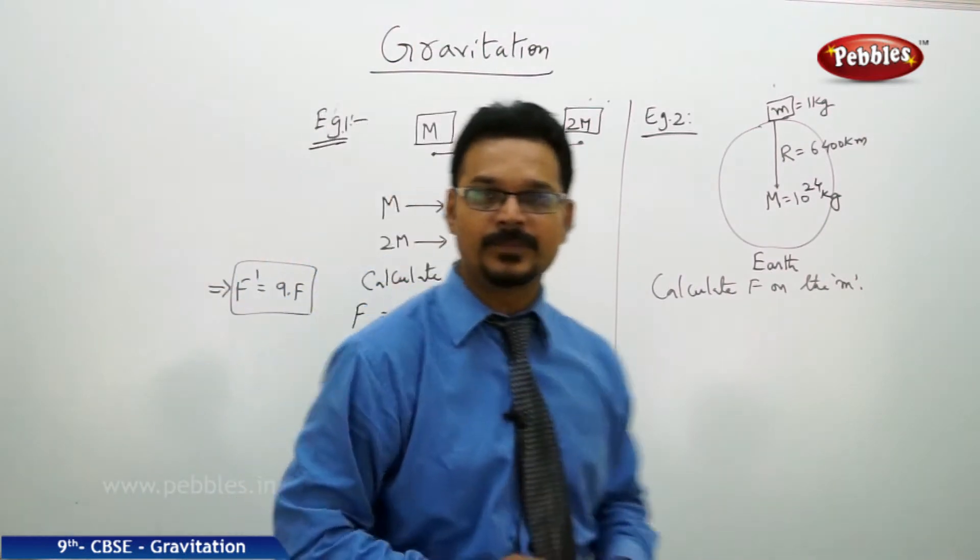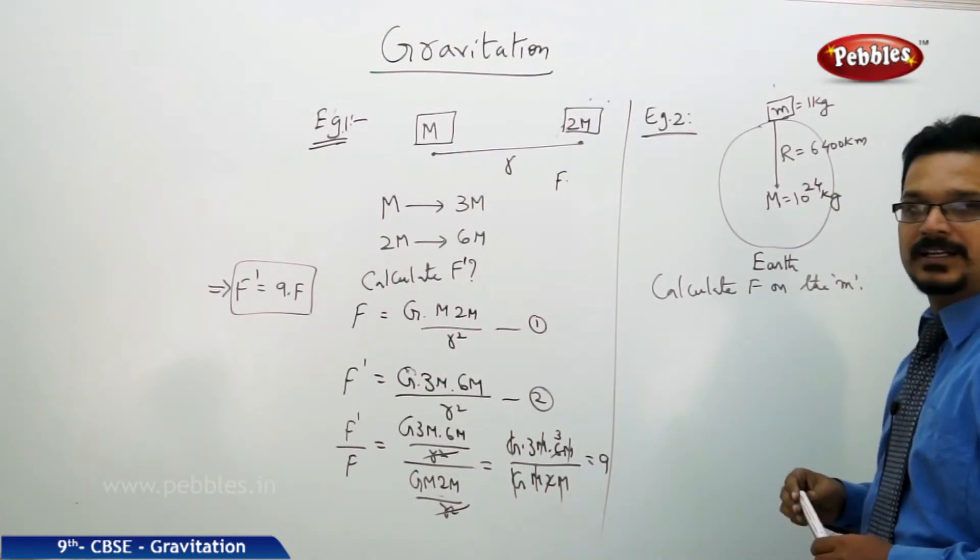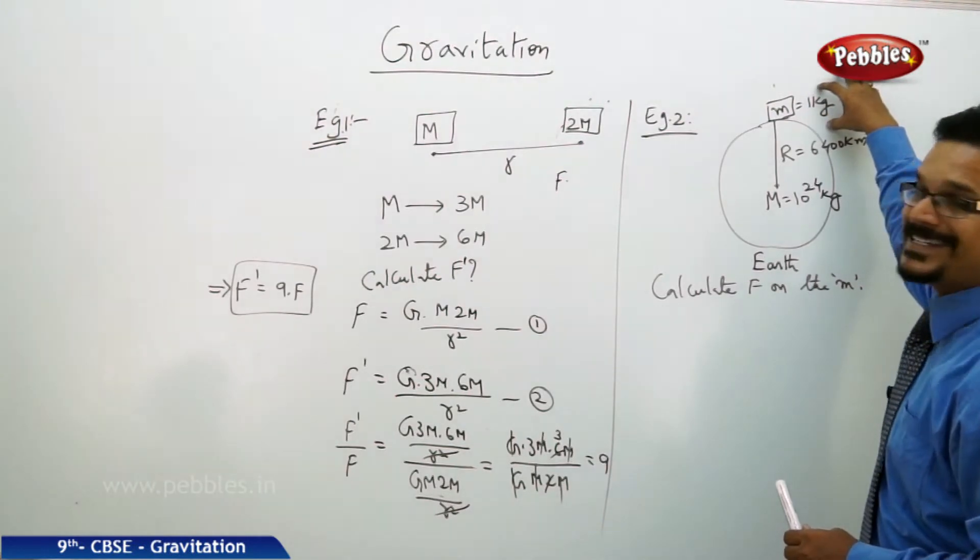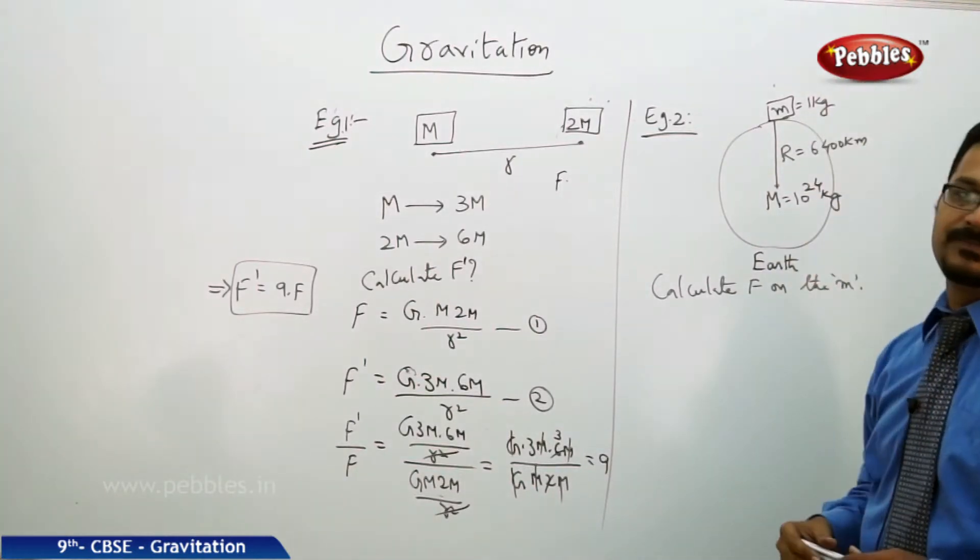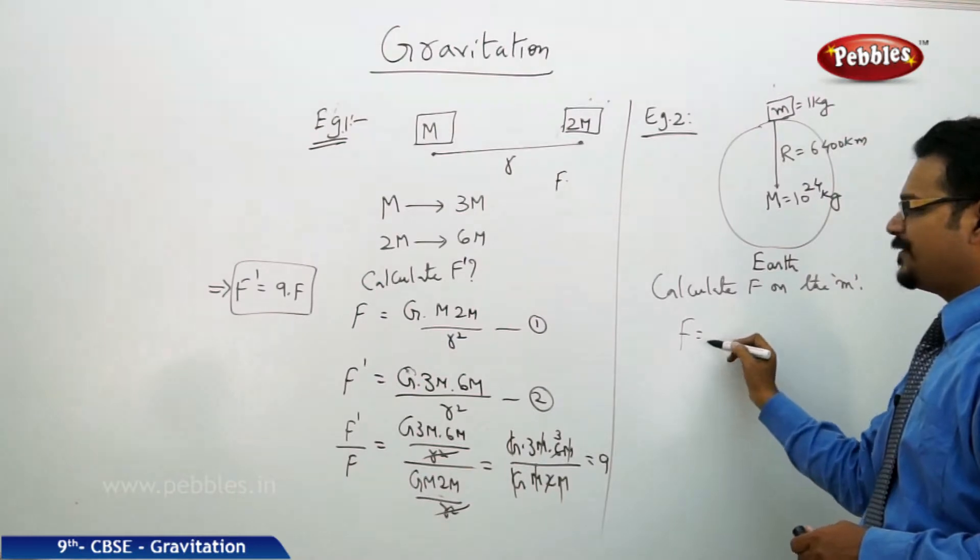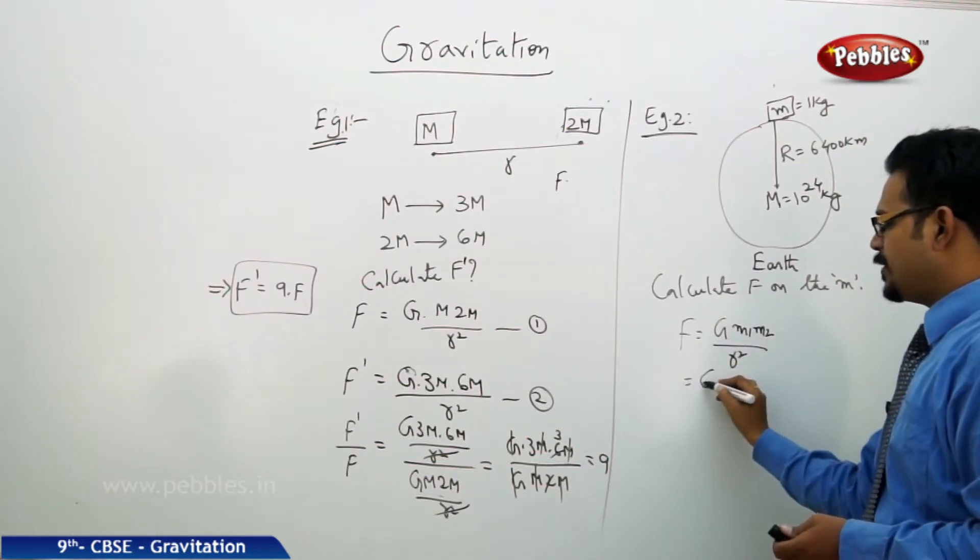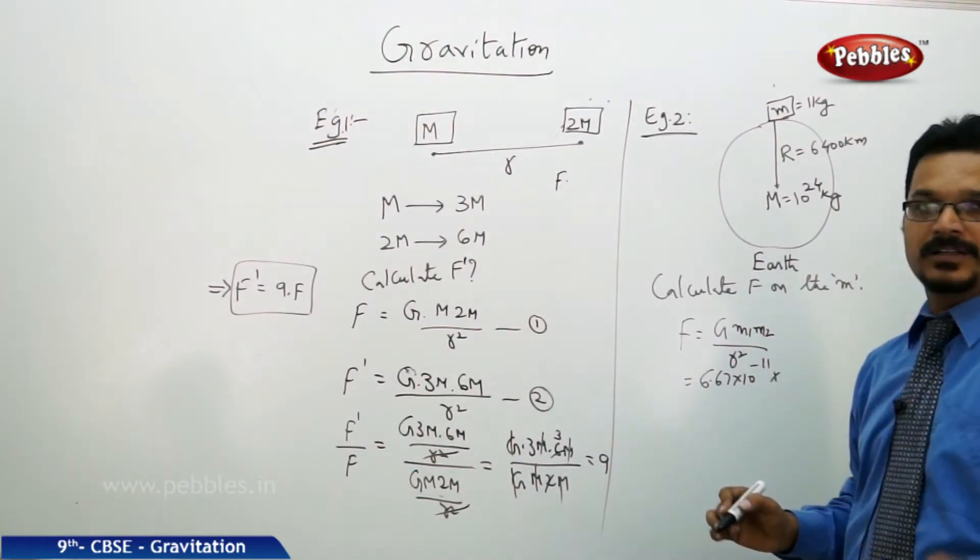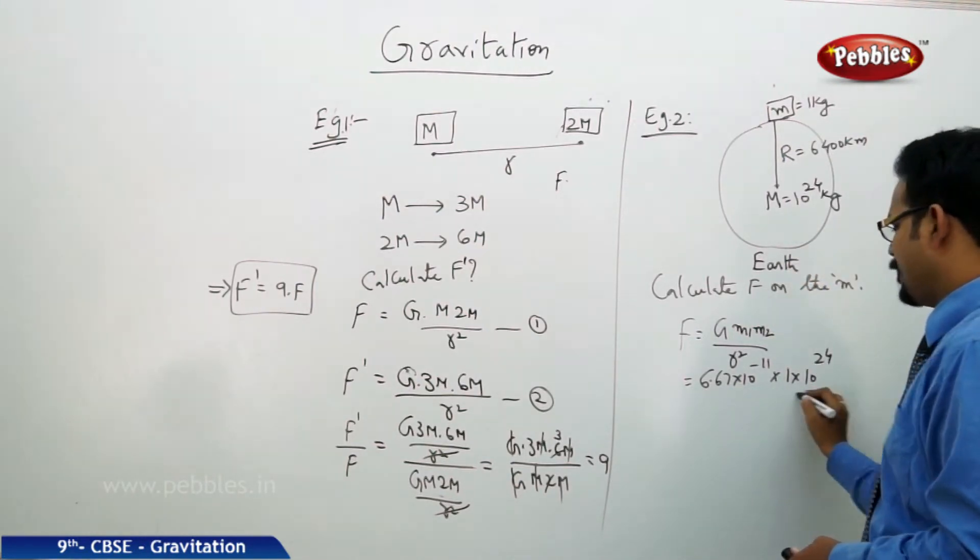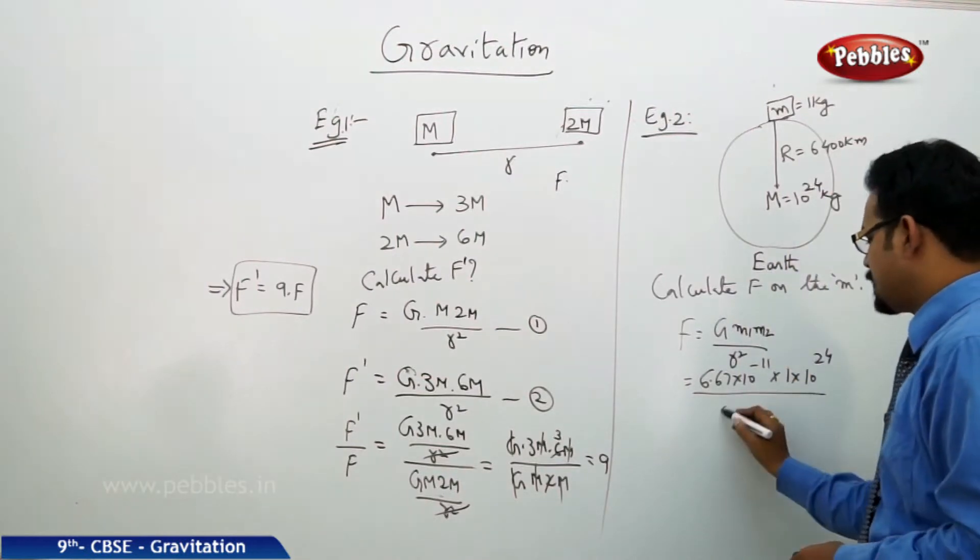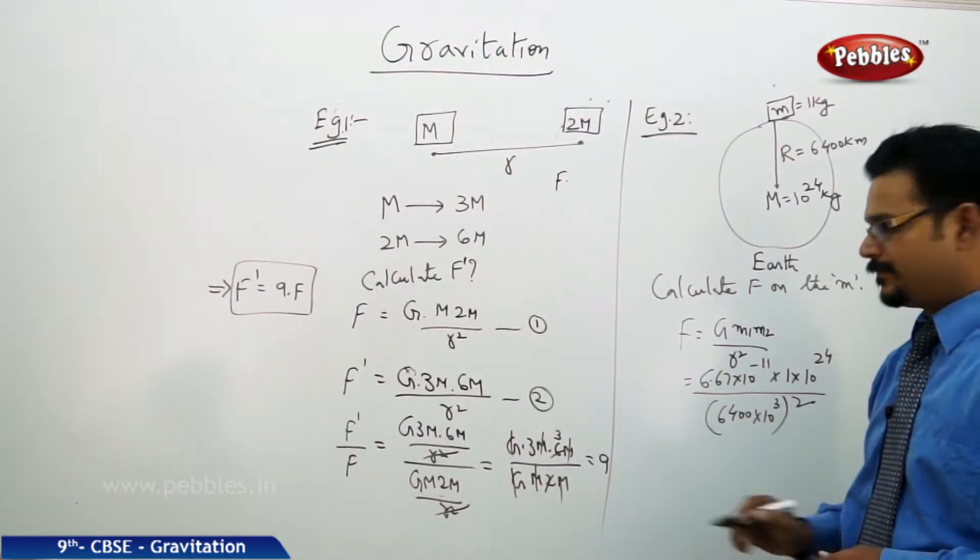This is how you can solve numerical by applying the law of gravitation. Now go to the second example. In this example there is an earth having mass 6 into 10 to the 24 kg at the center, and there is one more massive body of mass 1 kg on the surface of the earth. The question is what is the force acting on the mass 1 kg? So apply the law of gravitation similarly: f equal G m1 m2 by r square, and G value you know 6.67 into 10 to the minus 11.